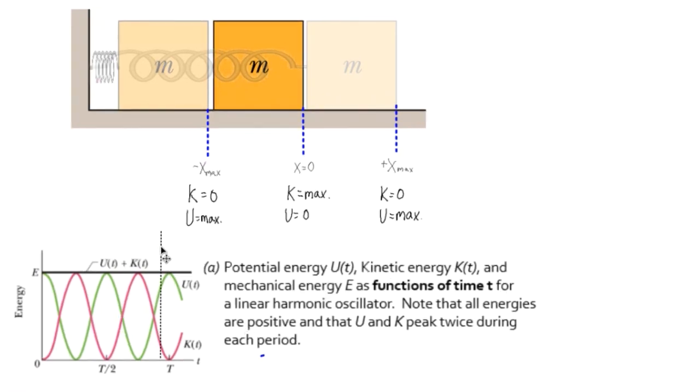So if I chose a point, say right there, this value of potential plus this value of kinetic adds to this total value, E, that is the solid black line.